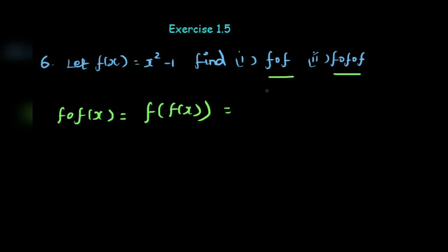If you write f, f, f and it confuses you, you can change the letters to avoid confusion. Now f of f of x, so we substitute f of x which is x square minus 1.